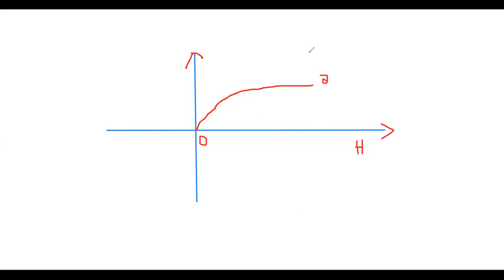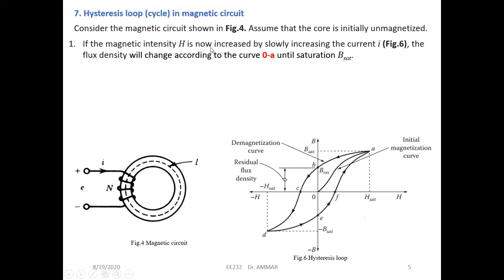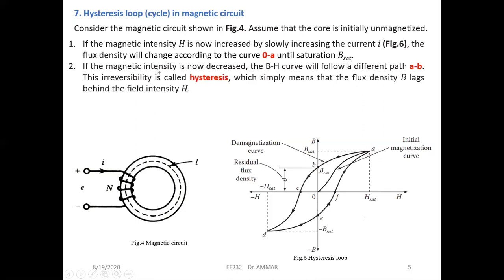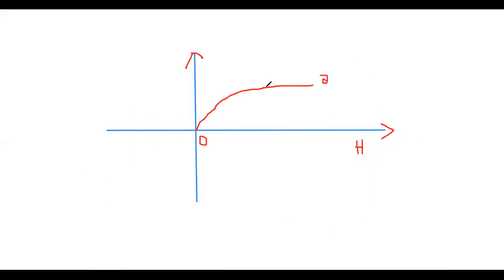Now if we want to decrease the magnetic field intensity — to remove the magnetization — B increases with H along the magnetizing curve until saturation at point A. Then, in the second phase, if we want to decrease the magnetic field intensity back toward zero, because of the characteristic of ferromagnetic materials this curve will take a different path — it will not retrace the same path. It will take another path until a new point.